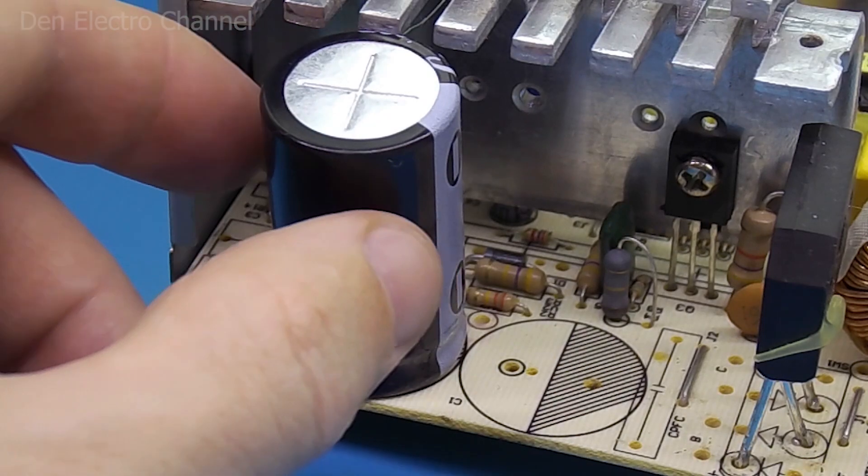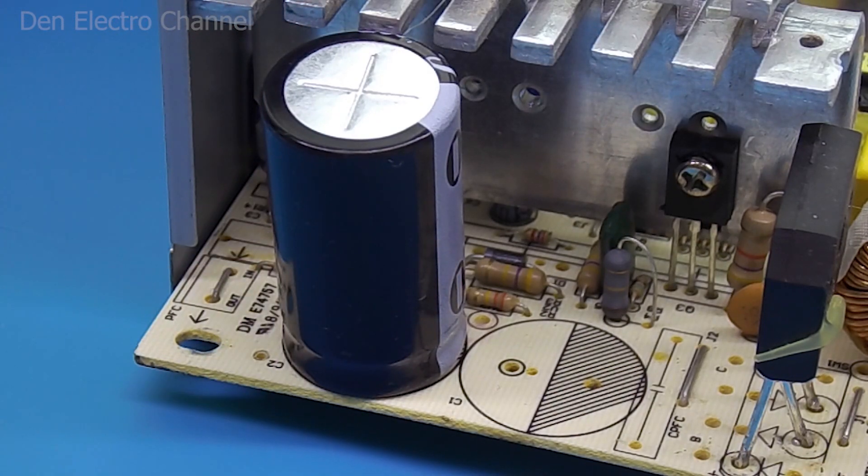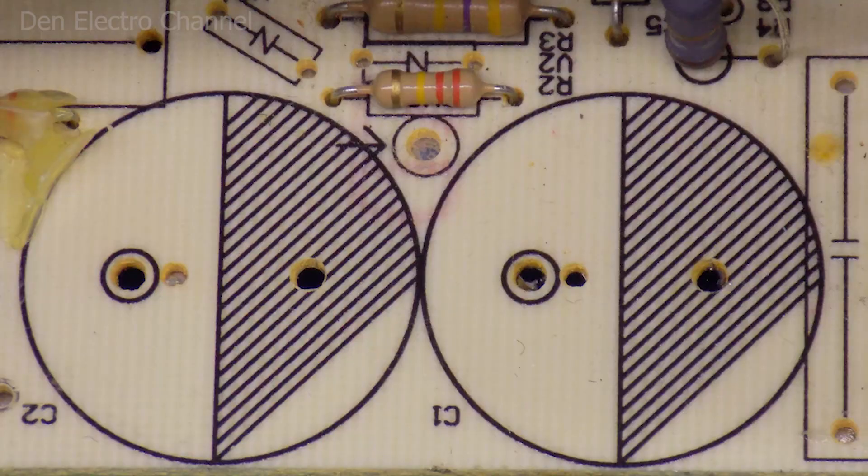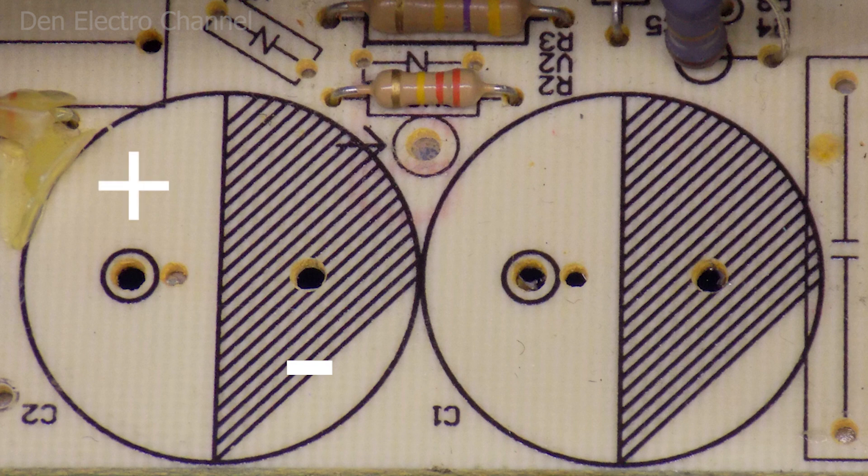In this case, a drawing on the board in the place where the old capacitor was installed can help. Usually a circle is depicted here. The minus of the capacitor is inserted into the black half, and the plus into the white half.